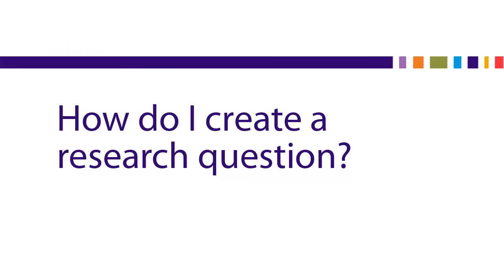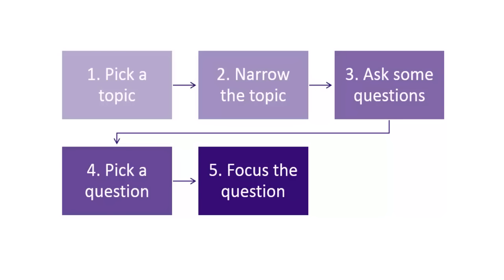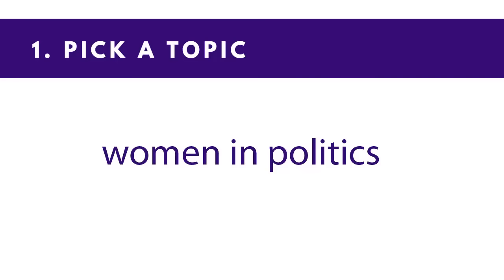Next, we'll look at how to create a research question. We'll follow some steps. First, pick a topic you're interested in — then find one aspect of the topic you want to focus on. Think of some questions you could ask about that aspect of the topic, pick one, then focus it to be sure it's a good question. We'll go through these steps using our example. First, pick a topic you're interested in, like women in politics.